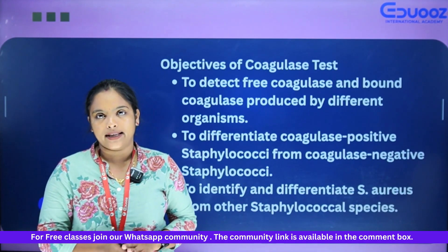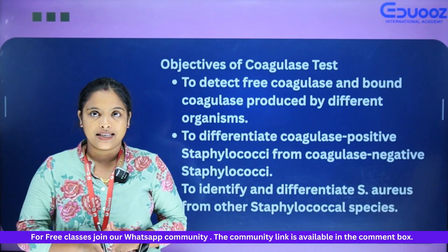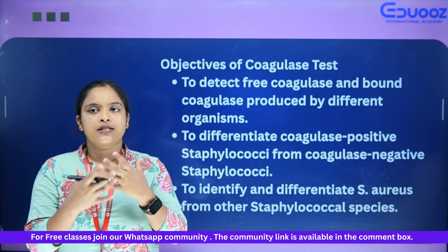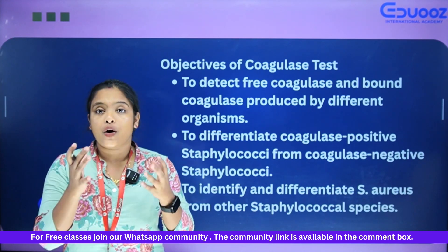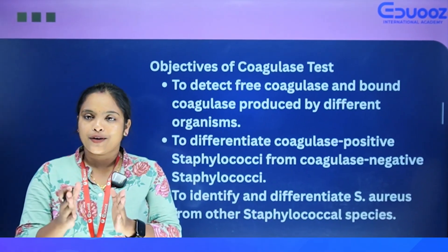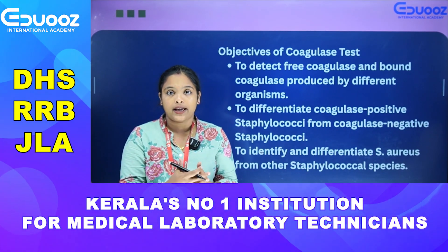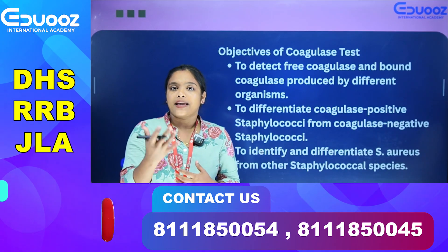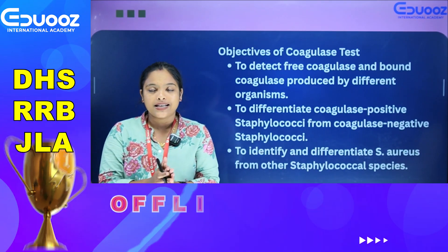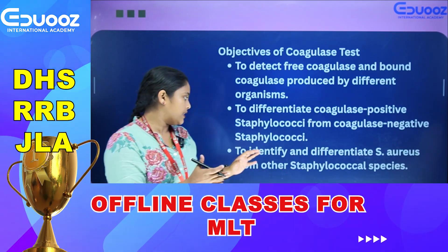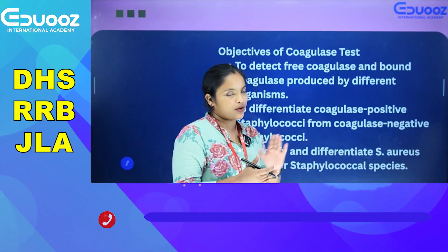The objective of the coagulase test is to detect free coagulase and bound coagulase produced by different organisms. Coagulase positive Staphylococcus and coagulase negative Staphylococcus are differentiated. The last point is to identify and differentiate Staphylococcus aureus from other Staphylococcus species.